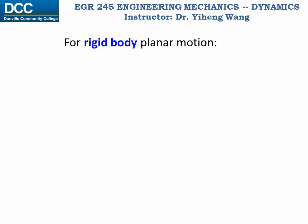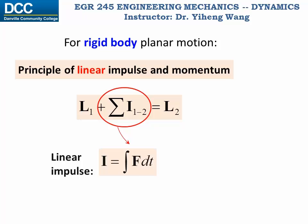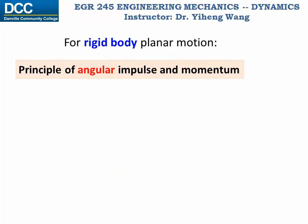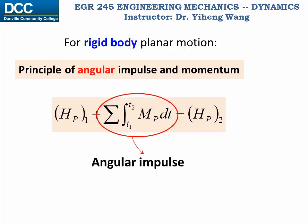Now that we have defined linear and angular momentum for a rigid body, the principle of linear impulse and momentum from particle kinetics still applies: the initial linear momentum plus the linear impulse from state one to state two equals the final linear momentum. Linear impulse is the integration of all external forces acting on the system over that period of time. Similarly, the principle of angular impulse and momentum applies. The initial angular momentum about point P, plus the total angular impulse about point P, equals the final angular momentum about point P. Angular impulse is the integration of all external moments about point P over the time period.